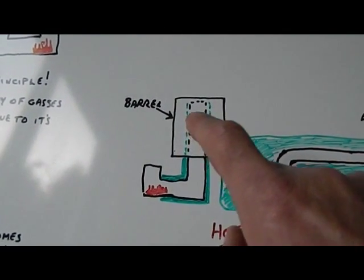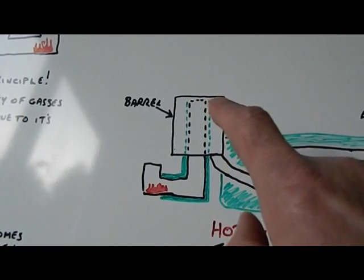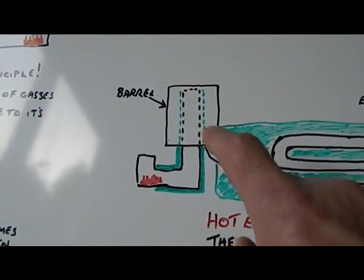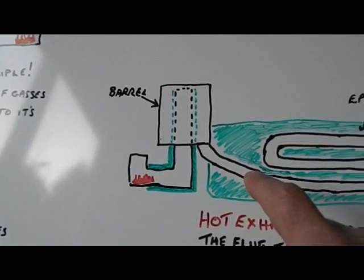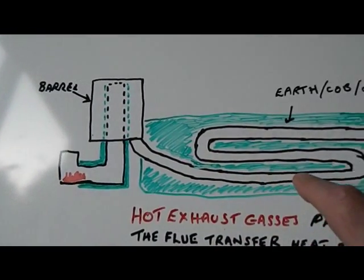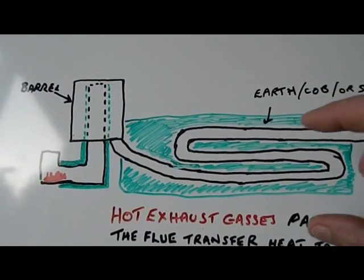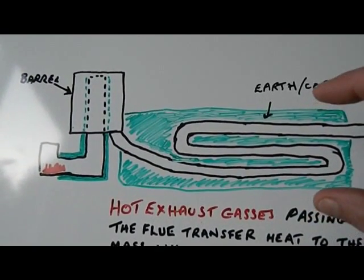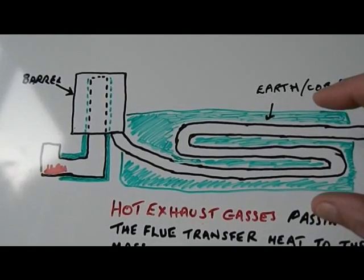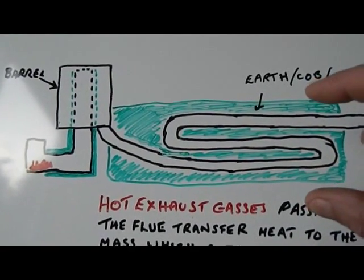And then the gases come down over the top, they cool quickly and they fall, and they fall into a collector, which is the flue, which is then buried in a mass of earth or some such stones, cob. There are many different things you can use.